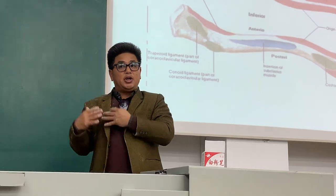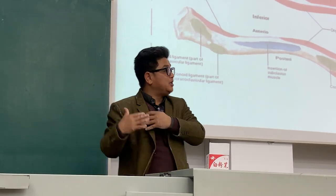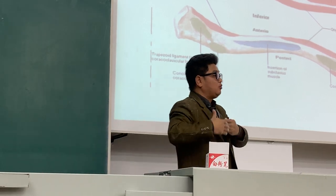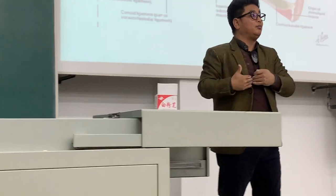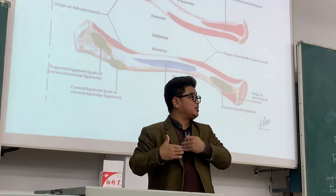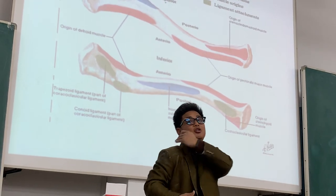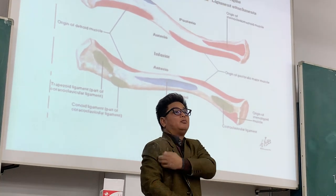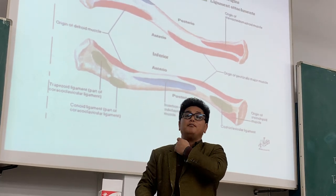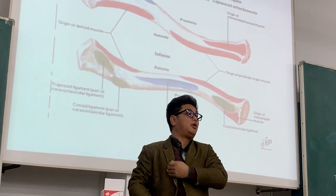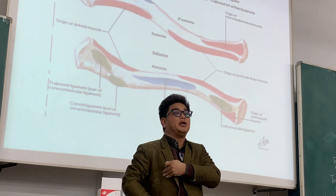The posterior wall is formed of the subscapularis muscle, then further down we have teres major and latissimus dorsi muscle. The lateral wall was formed by the intertubercular sulcus, and the medial wall was formed by the upper ribcage area plus serratus anterior muscle.